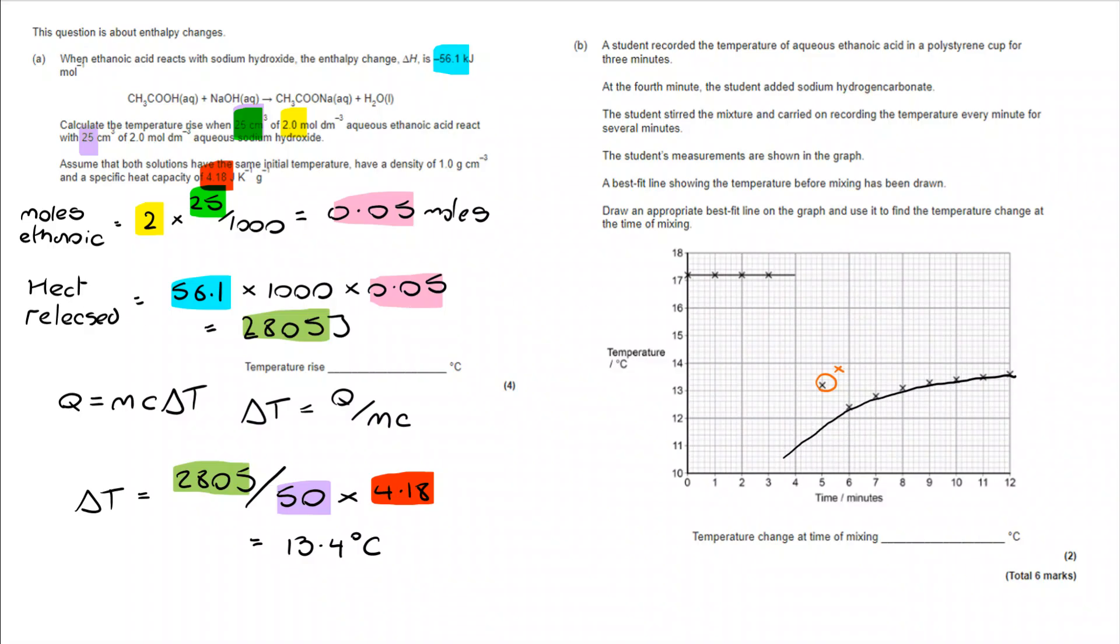Once I've done that, I find out what the difference is at four minutes. If I take a look here, I can see that 17.2 and it's gone down to 11. So, for my reading here, I've got a change of 6.2 degrees C. That's the temperature it's gone down by.